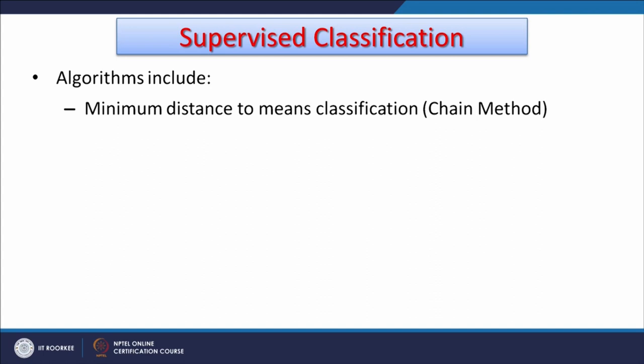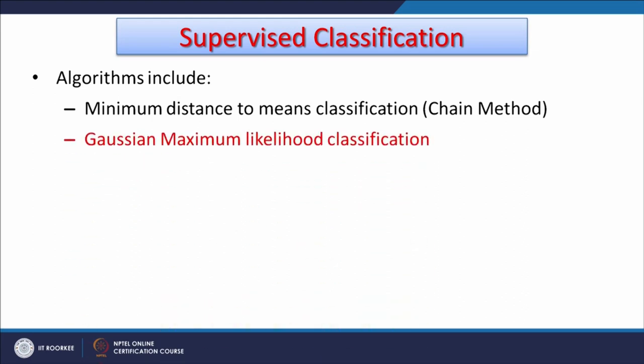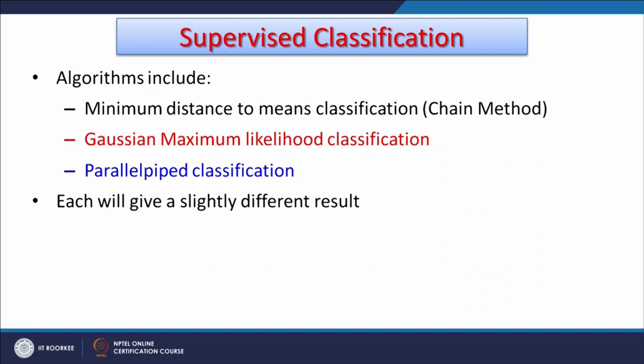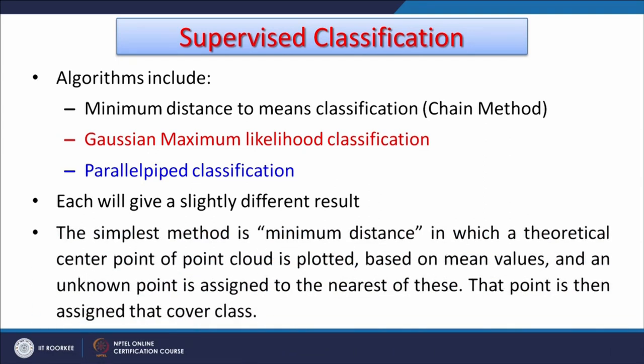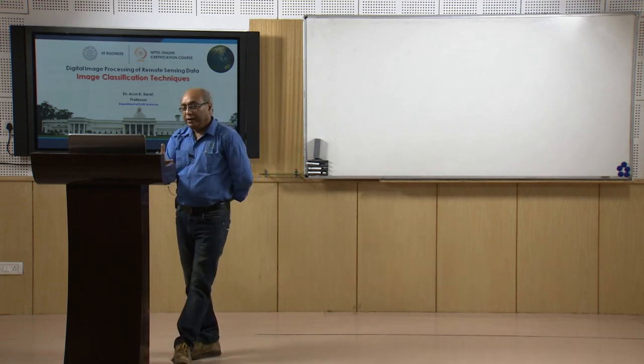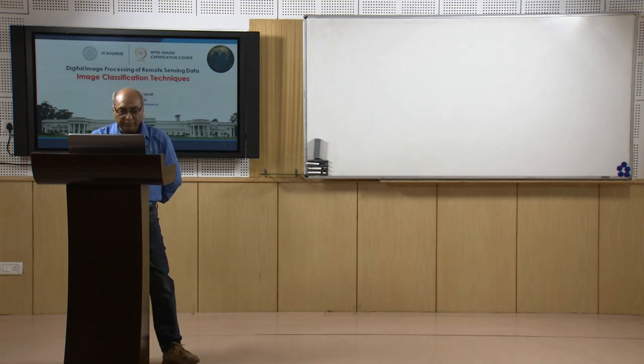Supervised classification algorithms include: minimum distance to mean classification (also called the chain method), Gaussian maximum likelihood classification, and parallel piped classification. Each of these options produces slightly different results because the decision of which cluster belongs to which class is made differently by each technique.